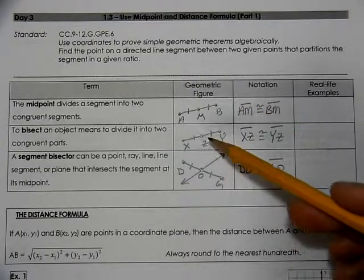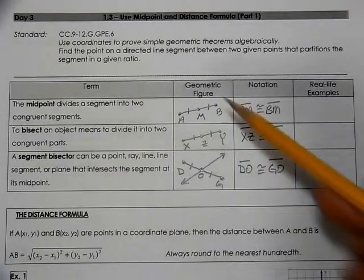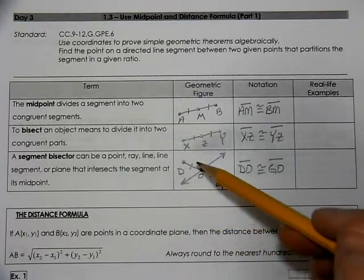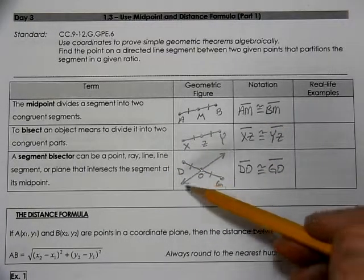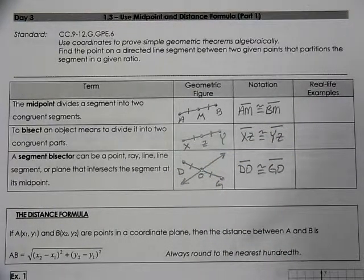Those are different ways to represent the same concept. M is in the middle, Z is in a bisector or bisects the segment, and the line is a bisector.